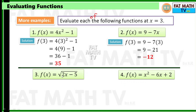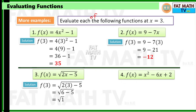Number 3, f of x equals square root of 2x minus 5. Replace x with 3. So f of 3 is square root of 2 times 3 minus 5. 2 times 3 is 6, 6 minus 5 is 1, and square root of 1 is 1. So f of x equals square root of 2x minus 5 is equal to 1 when x equals 3.